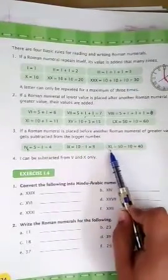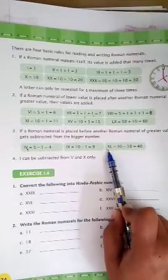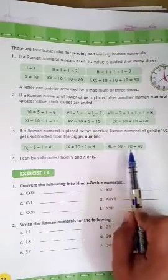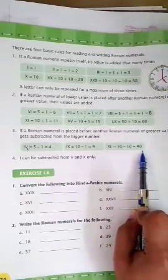X is smaller than L. So, L is used for 50 and X is used for 10. So, we subtract 10 from 50. 50 minus 10, answer is equal to 40.